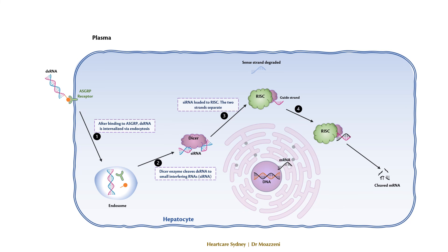These RNAs are loaded onto the RISC complex, where the sense strand is degraded. The activated complex then finds and cleaves the messenger RNA matching its guide strand, interfering with the production of the PCSK9 molecule.